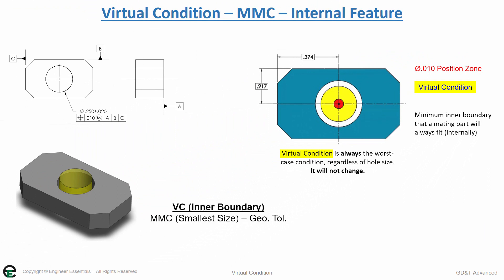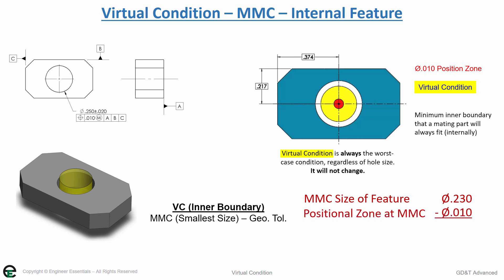Your virtual condition for an internal feature is your inner boundary. This is your MMC, your smallest size, minus your geometric tolerance. In this case, it's the MMC size .230 minus .010, which gives you a virtual condition of .220 — the theoretical boundary that your hole can never cross into to ensure proper assembly.